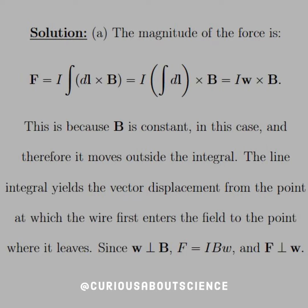No surprise there. Since W is perpendicular to B, we know that we just have the magnitudes to worry about. F equals IBW. And the force is perpendicular to W, clearly, because it's a cross product.